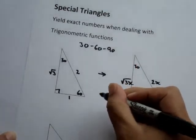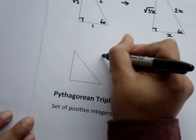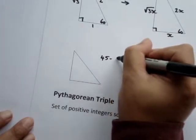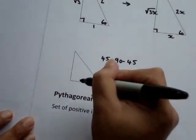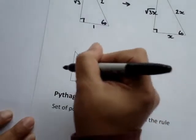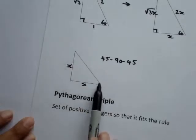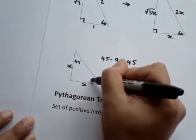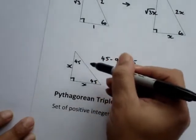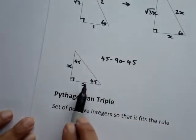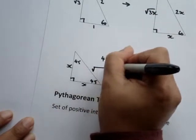Similarly, for a 45-45-90 triangle: if we have one short side as X, then the other short side is also X, because this length has to equal that length for these two angles to both be 45 degrees. The right angle is the remaining angle. So for a 45-45-90 triangle, both legs are X and the hypotenuse is X times the square root of 2.